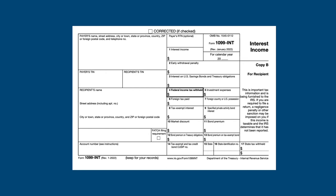As usual with these forms, the payer and recipient information is on the left-hand side of the form, including the payer's and the recipient's tax identification numbers. For either party, this could be a social security number or employer identification number.